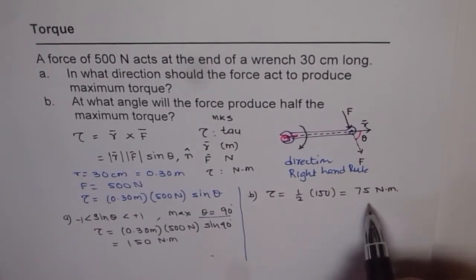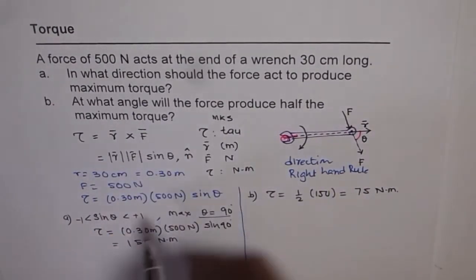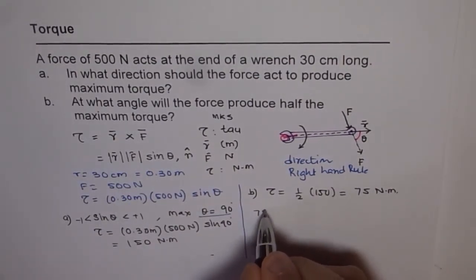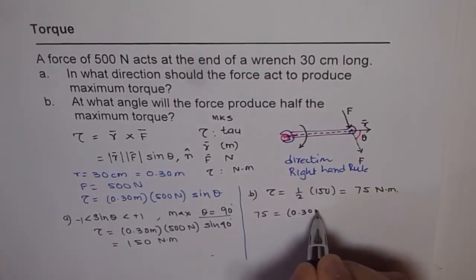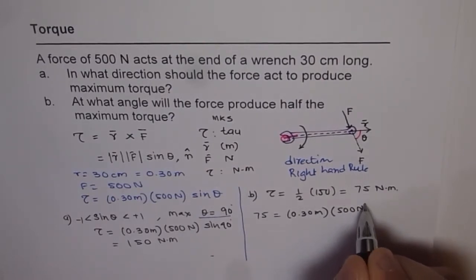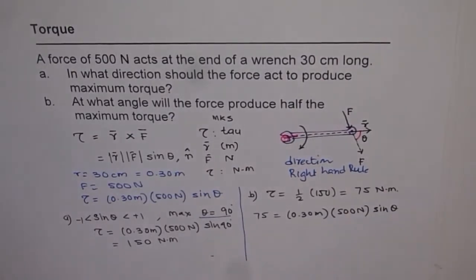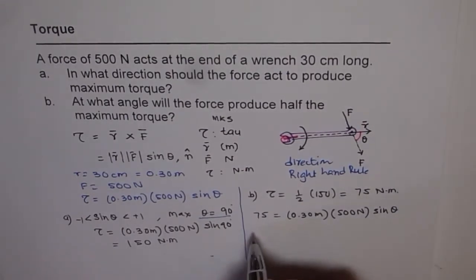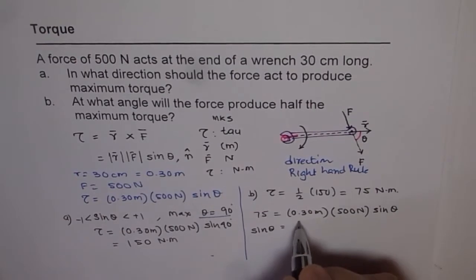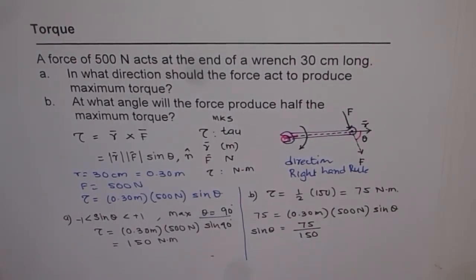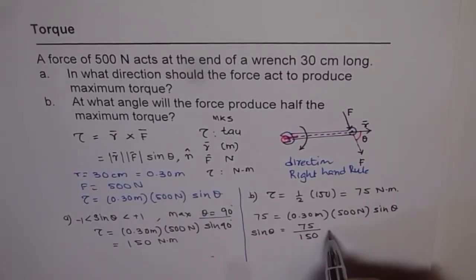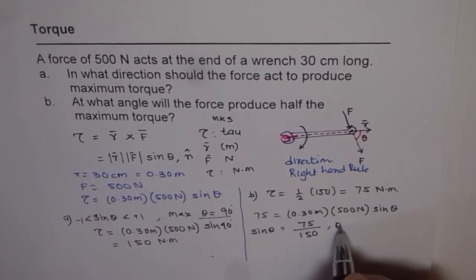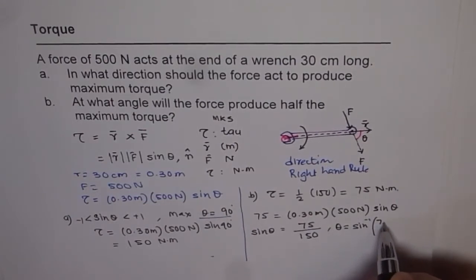What we need to find is the angle of force. We will again substitute in the same formula. We get 75 as the torque. Radial length R is 0.30 meters. The force is 500 newtons times sine of theta. Sine theta is equal to 75 over 150. From here, you can write down theta as sine inverse of 75 over 150.